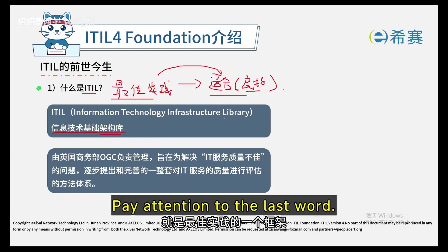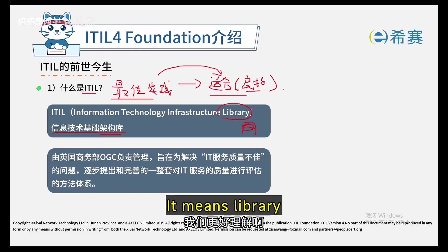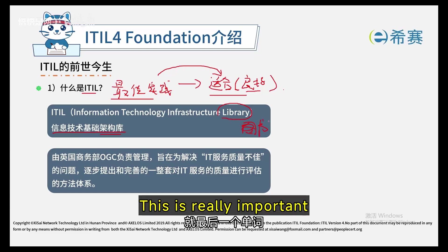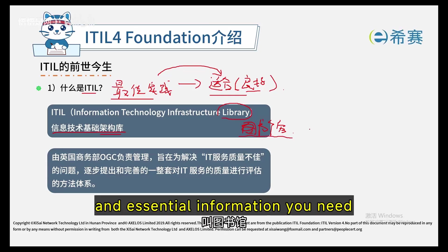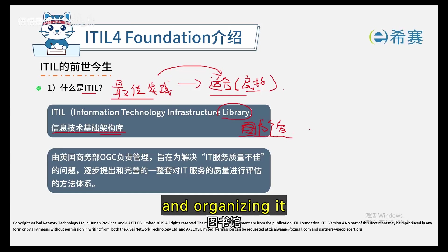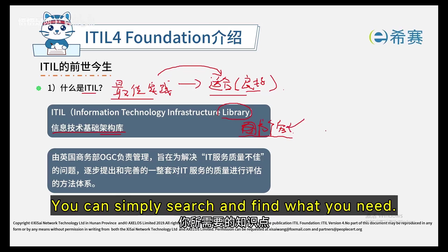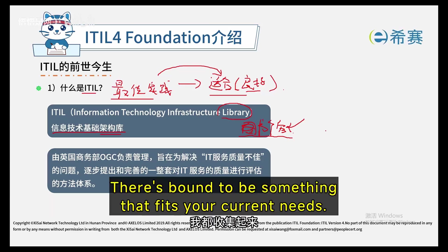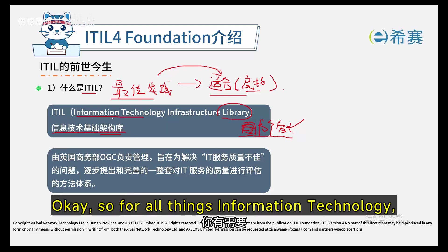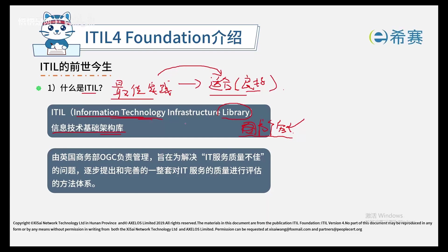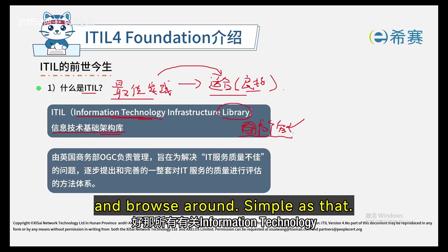If we look at the English name, it becomes clearer. Pay attention to the last word — it's key to understanding the concept. It's 'library.' A library is about taking the best theoretical concepts and essential information, collecting it all and organizing it. Whenever you need something, you can just search this library and find what you need. For all things information technology — or IT for short — it's all in this library. Whenever you need something, just look it up and browse around. Simple as that.